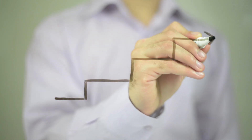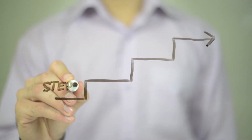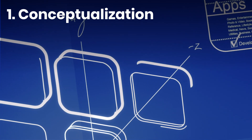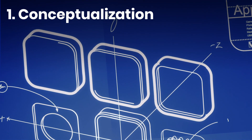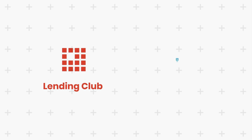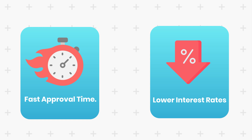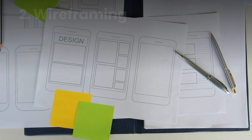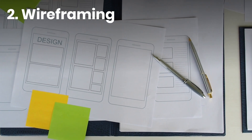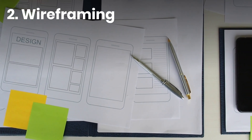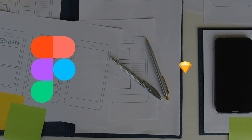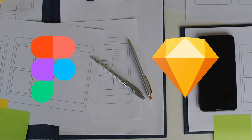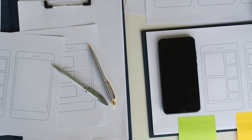With the groundwork laid, let's move to the personal loan app development steps. Number one is conceptualization — define your app's unique value proposition. What makes your app different from Lending Club or SoFi? For example, you might offer faster approval times or lower interest rates for specific demographics. Number two is wireframing — create a wireframe of your app. Think of it as sketching out a blueprint of your house. Tools like Figma or Sketch are excellent for this purpose; they help you visualize the app's layout and flow before you start building.